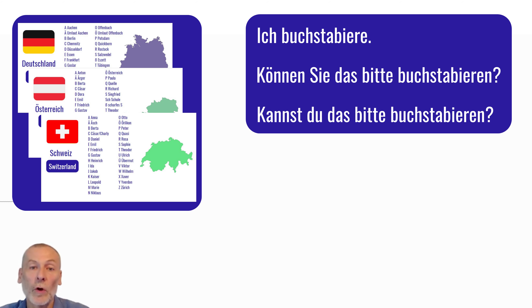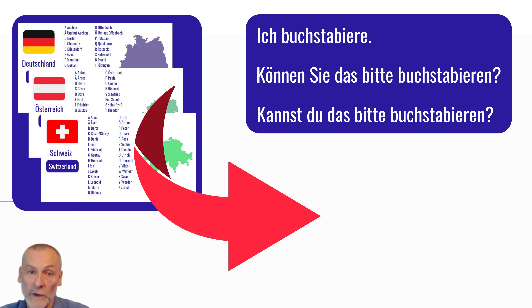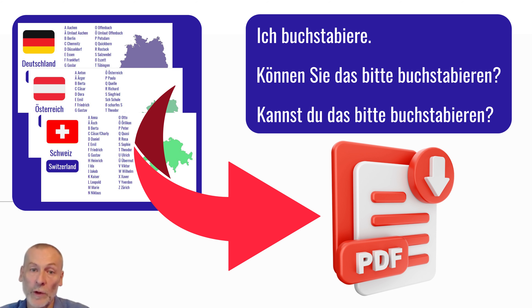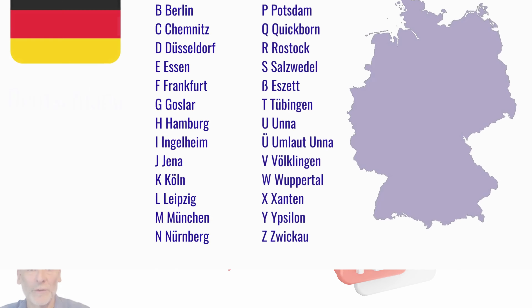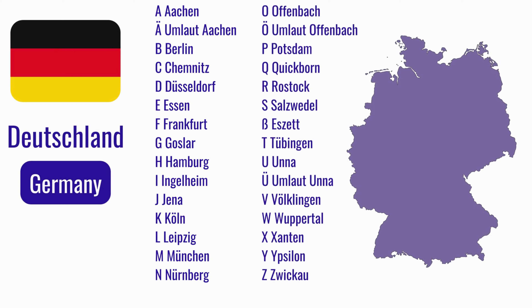You can also download the tables as a free PDF — the link is in the description. We start with Germany. When we spell, when wir buchstabieren, we say the letter and then 'wie' and the name. Like: A wie Aachen.